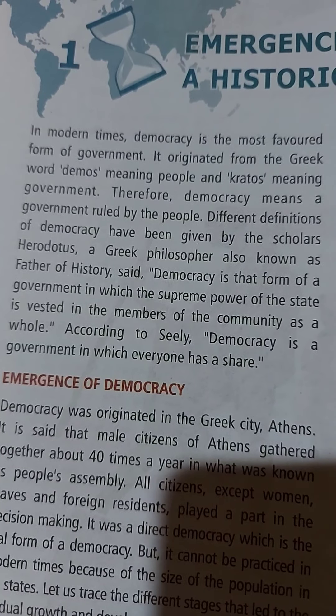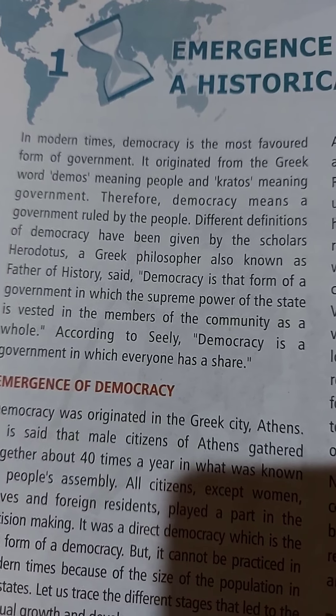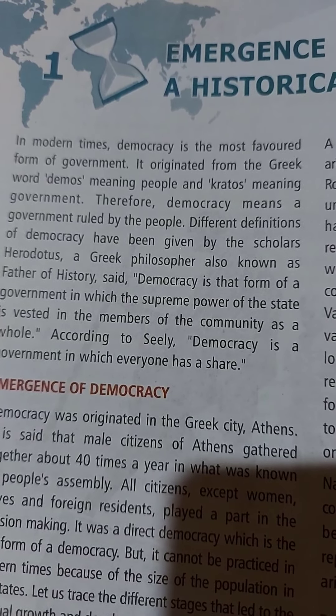So what does democracy mean? A government ruled by the people. Different definitions of democracy have been given by scholars. Herodotus, a Greek philosopher also known as the father of history, defined democracy as that form of government in which the supreme power of the state is vested in the members of the community as a whole.